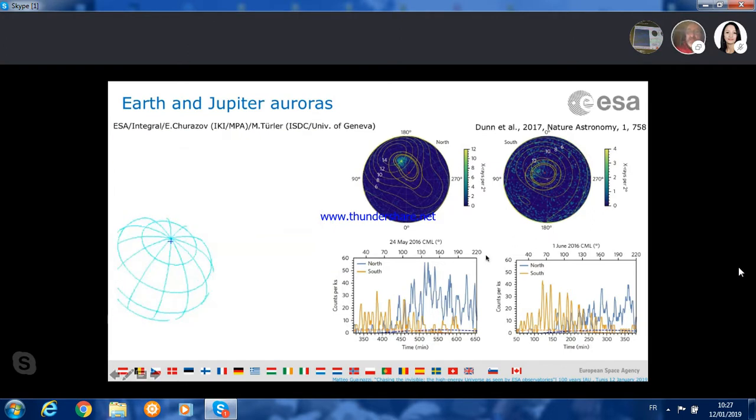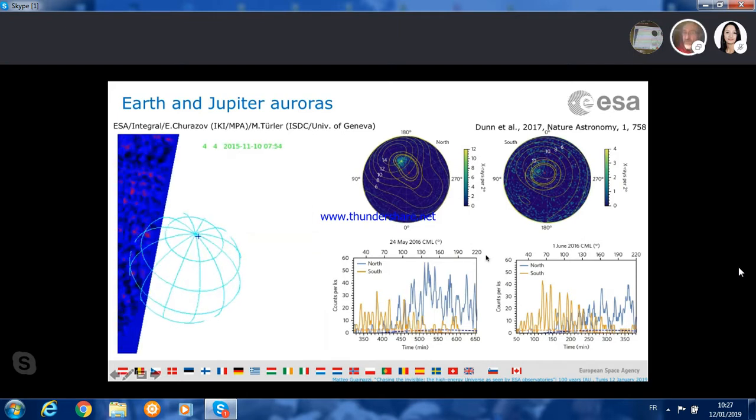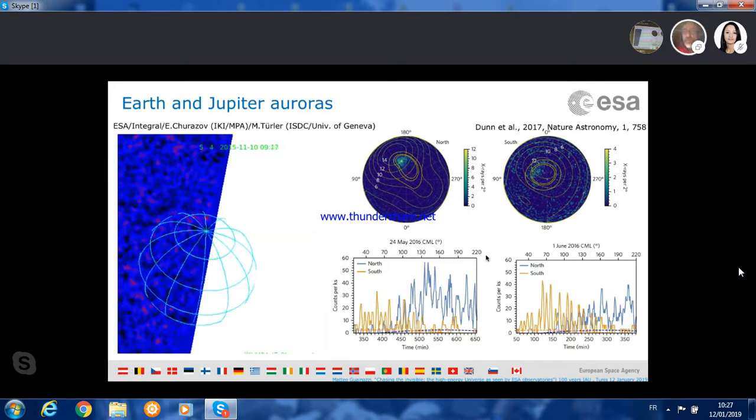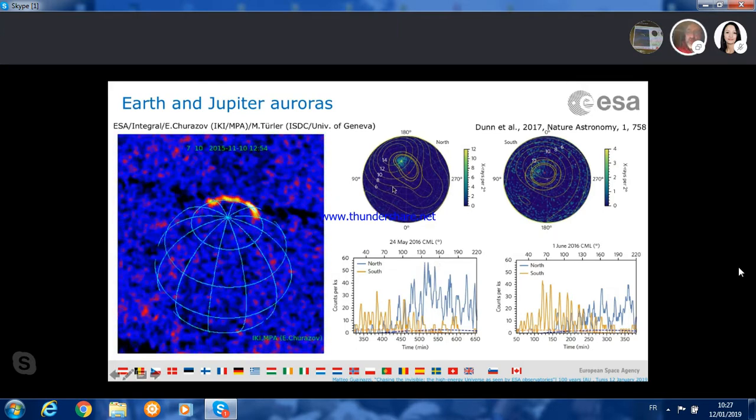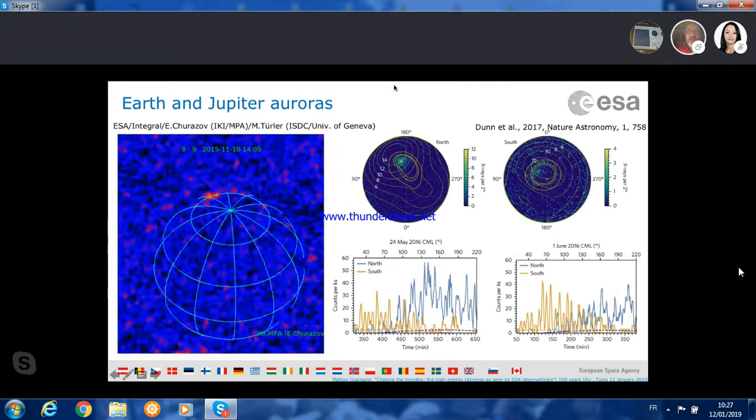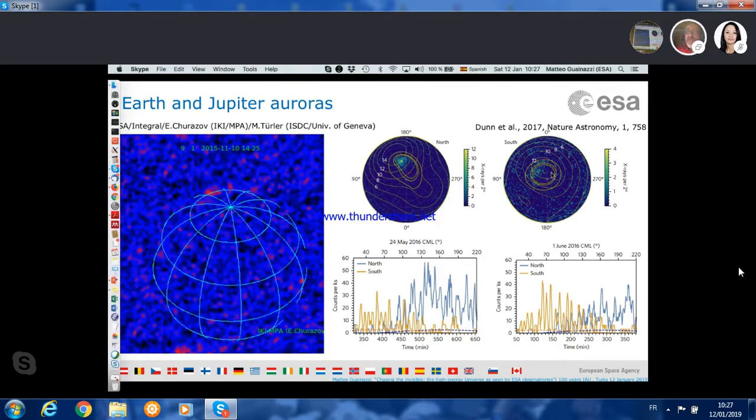But auroras can be seen also in other planets, for instance in Jupiter. And what I show here on the right side are plots of the aurora on Jupiter on the north side and on the south side. And these measurements were taken by several spacecraft in the infrared and in the X-rays, among them also XMM-Newton.